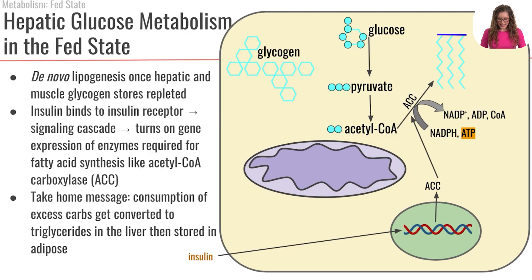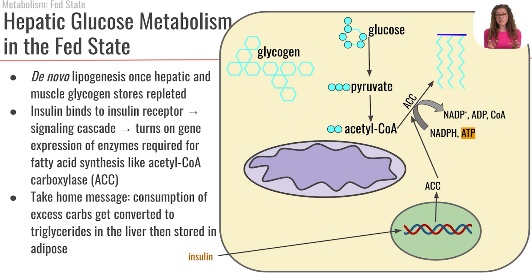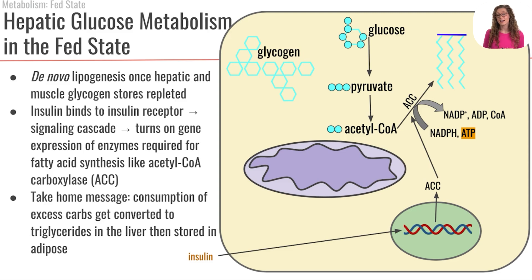Let's look at what happens after we've made enough glycogen. We know from earlier classes that we have a limited capacity to store glycogen, because glycogen is a highly branched, hydrophilic molecule that can bind water, making it heavy. When we've absorbed more monosaccharides than we can store as glycogen, in this fed state, we start breaking those monosaccharides down into acetyl-CoA and building them into fats through lipogenesis.